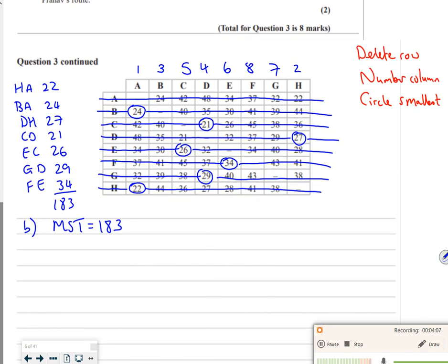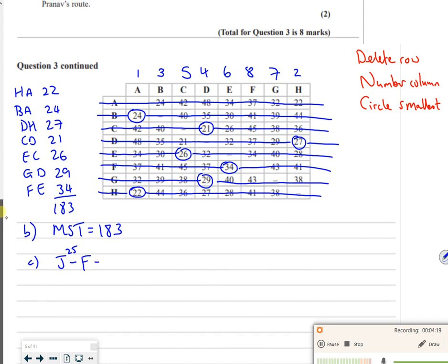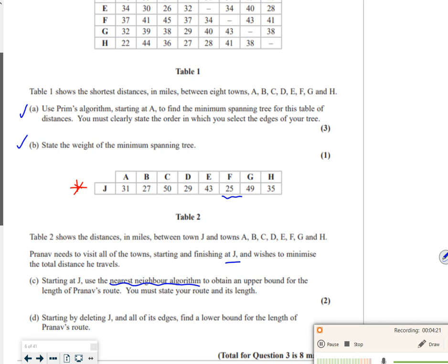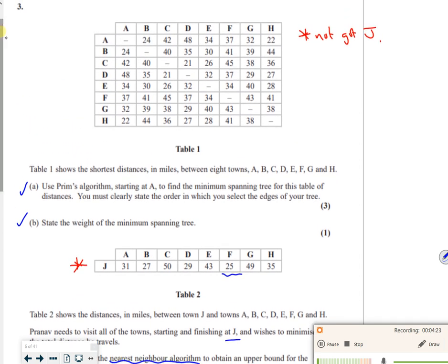So I'm going to do, so for part C, I'm going to do J to F for 25. We'll do a bit of shuffling up and down now, so I'm going to start at F all the way back up here. So the shortest one from F, so if I take that as a from and a to, so F to E is my shortest one.